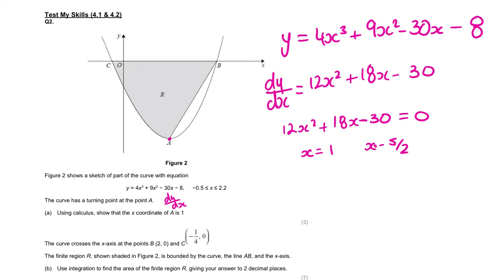I'm going to substitute that back into the original equation. x equals 1 is the coordinate of A — we don't reject the other solution, it just doesn't appear on this graph. So 4 + 9 − 30 − 8 equals minus 25, so y is minus 25. The coordinate of A is (1, −25). x equals minus 5 over 2 would be somewhere off this side of the graph. So we've shown the x-coordinate of point A.